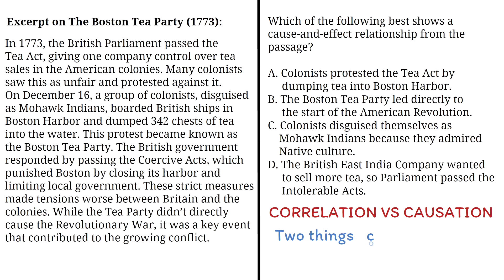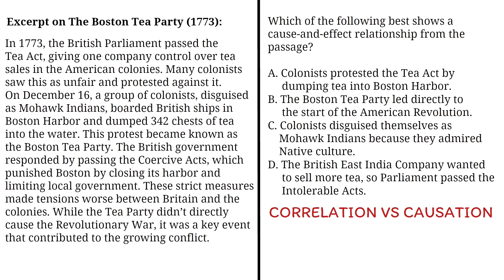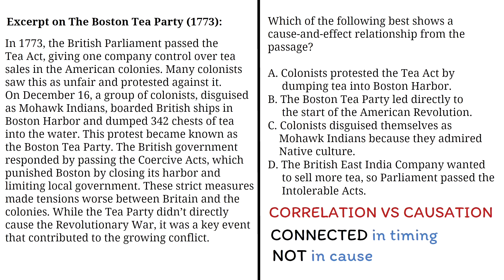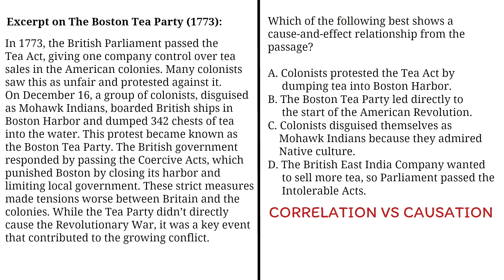A correlation is when two things happen at the same time, or one after the other, but one does not necessarily cause the other. They are connected in timing, but not necessarily in cause. Whereas causation means that one thing directly causes another thing to happen — it is a cause-and-effect relationship.